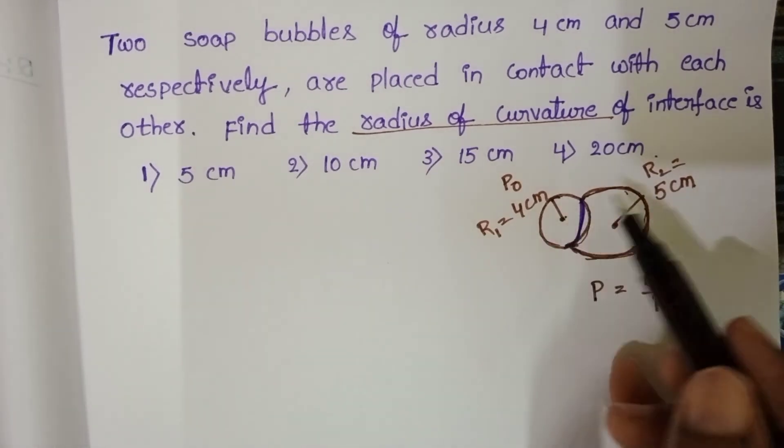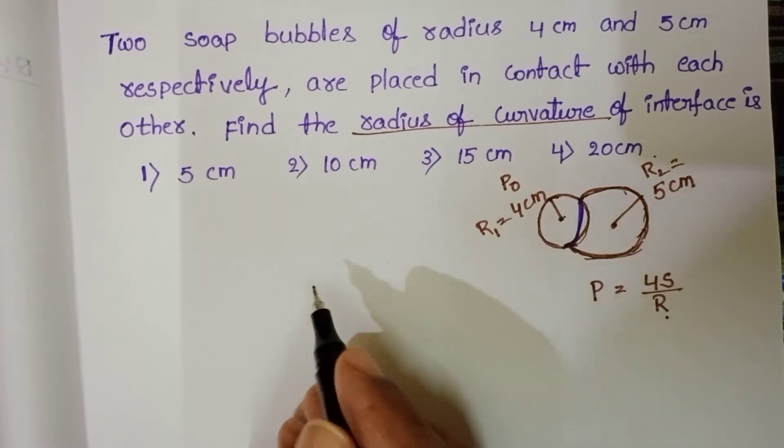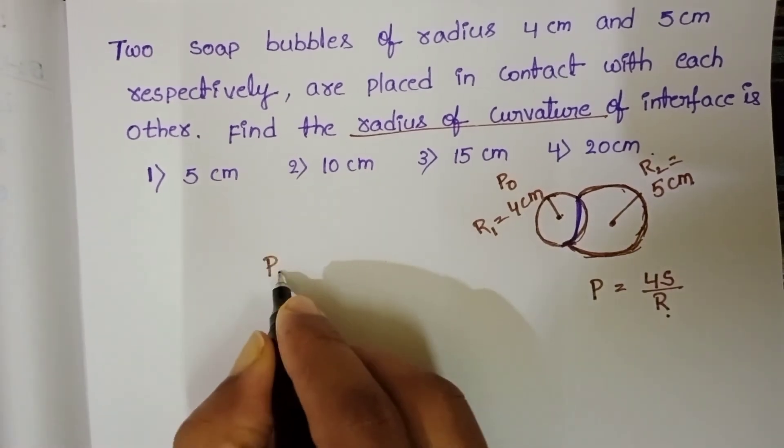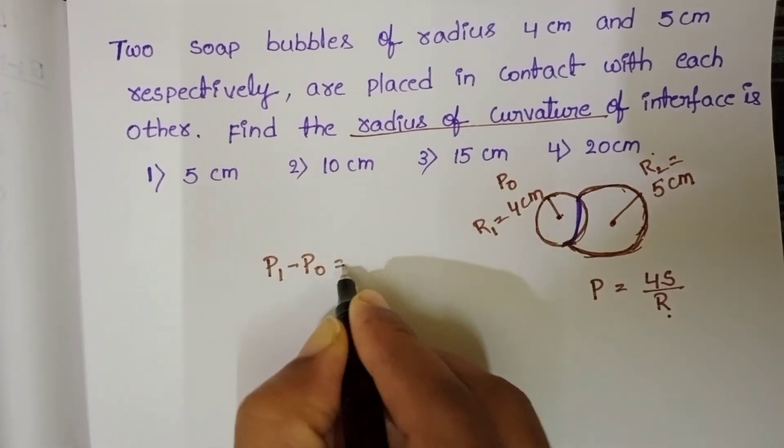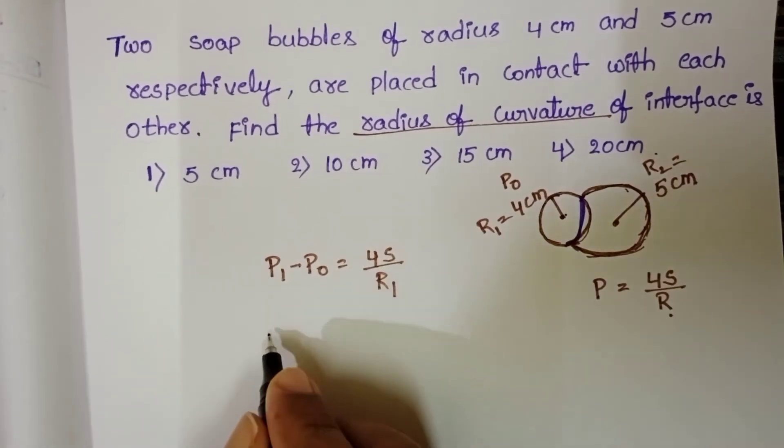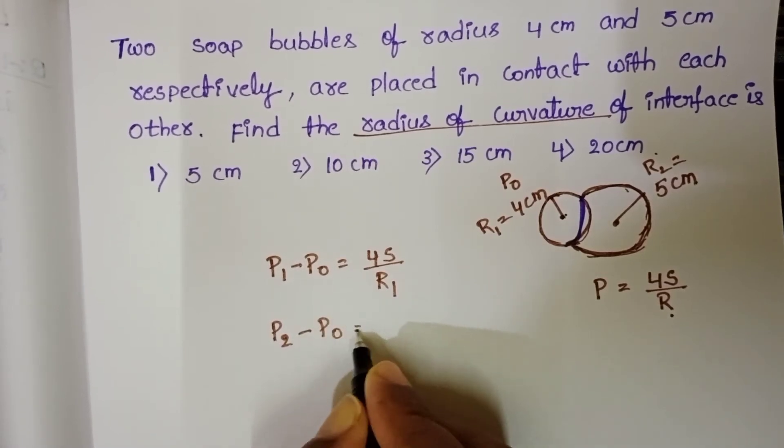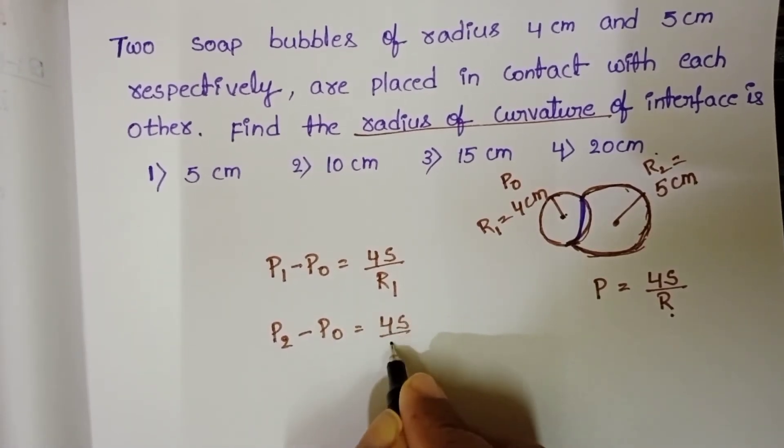So first bubble exerts more pressure. The pressure difference of the first bubble P1 minus P0 equals 4s by R1. And pressure exerted by the second bubble P2 minus P0 equals 4s by R2.